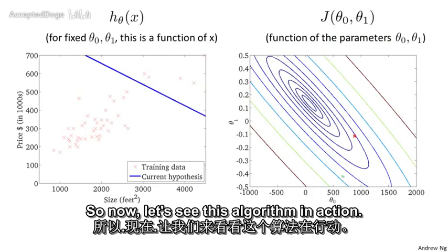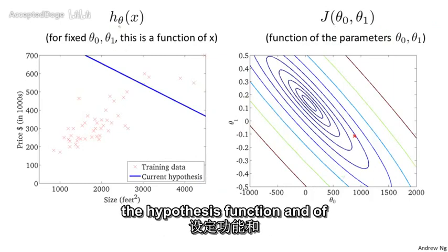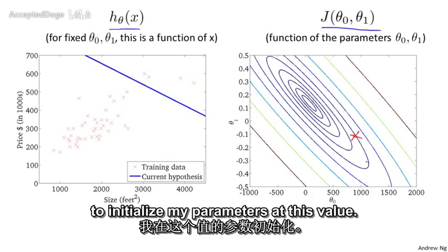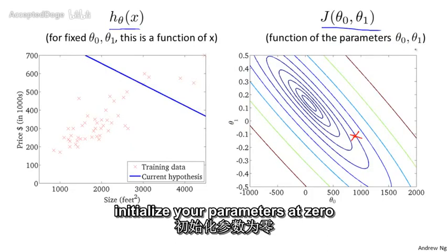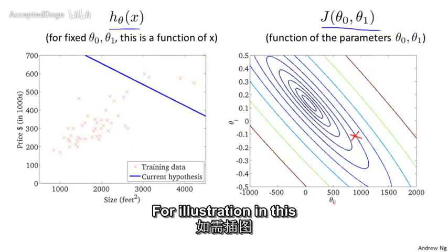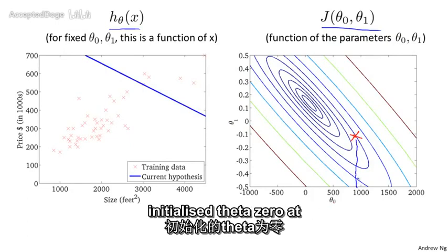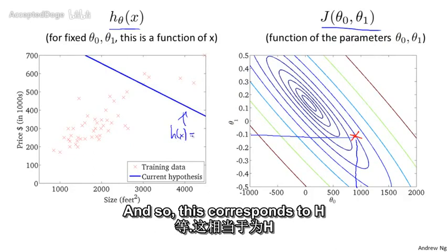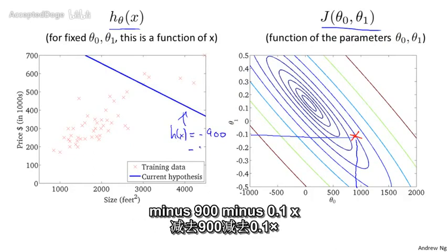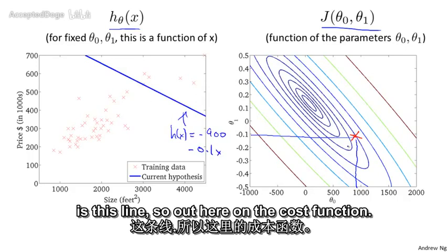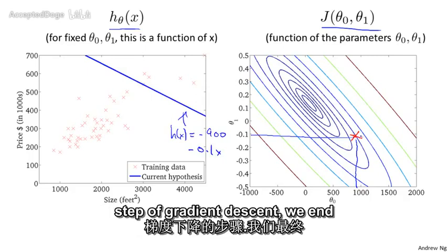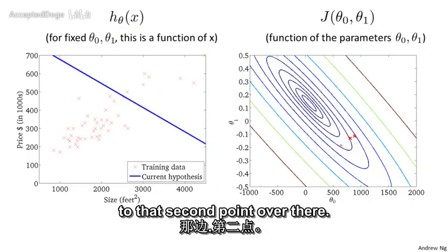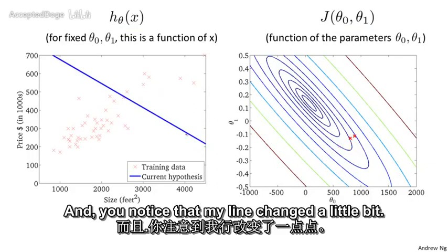So now let's see this algorithm in action. Here are plots of the hypothesis function and of my cost function J. Let's say I've initialized my parameters — usually you initialize at theta zero equals zero and theta one equals zero, but for illustration, I've initialized theta zero at about 900 and theta one at about minus 0.1. So this corresponds to h(x) equals 900 minus 0.1x. Now, if we take one step of gradient descent, we end up going from this point a little bit down and to the left to that second point over there, and you notice that my line changed a little bit.